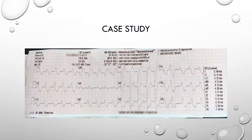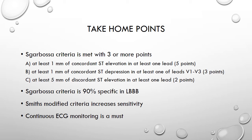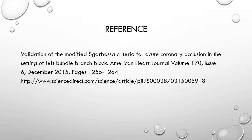On to some take-home points. To meet Sgarbosa criteria we need three points or more. Criterion A: at least one millimetre of concordant ST elevation in at least one lead — five points. Criterion B: at least one millimetre of concordant ST depression in at least one of leads V1 to V3 only — three points. Criterion C: at least five millimetres of discordant ST elevation in at least one lead — two points. Sgarbosa criteria is 90% specific for occlusion in left bundle branch block, and Smith's modified criteria increases the sensitivity for that. Continuous ECG monitoring is a must in ACS patients. Thanks to Mick, Olivia and Anthony for sharing this case study, and thank you all for watching. I hope you found this both interesting and helpful. Goodbye for now.